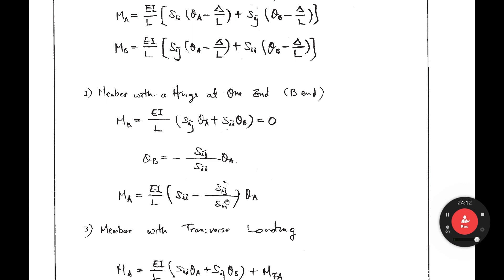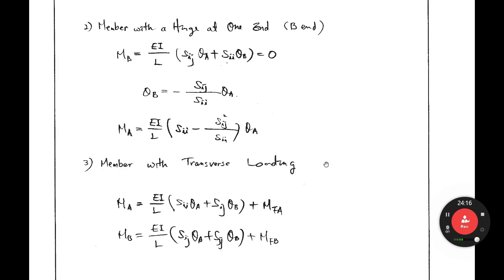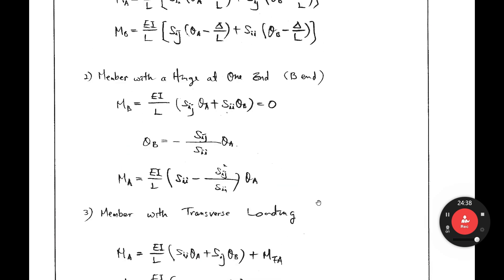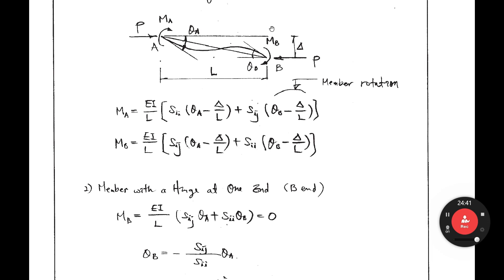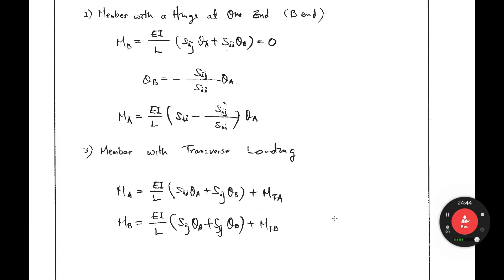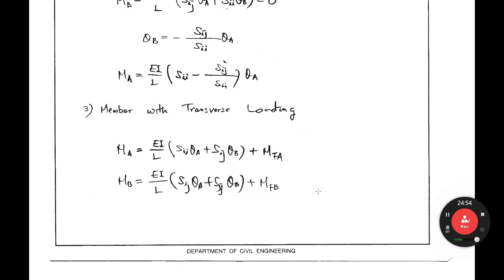If you have a member with transverse loading, in that case you have fixed-end moments at A and B that you add to the equations. It is very similar to the undergraduate course treatment — instead of SII and SIJ, you use them in the same way, basically.